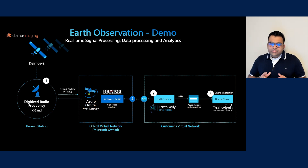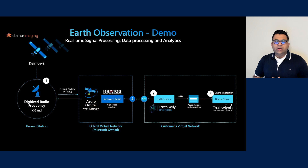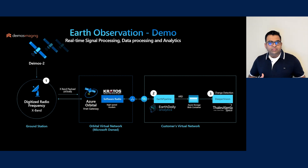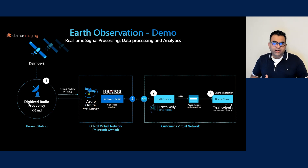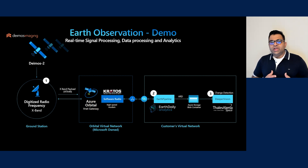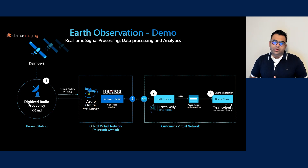In step two, we will demonstrate how the raw data from the Azure Storage Blob can be processed by Earth Pipeline, a data processing pipeline for satellite imagery that can enrich satellite images and make them analytics ready. We will then store the processed analytics-ready assets in Azure Storage Blob, which we process in step three.